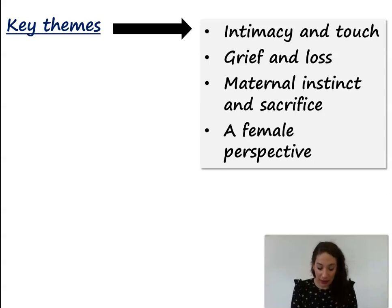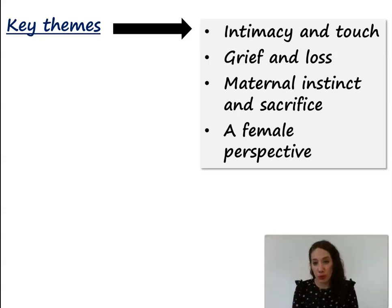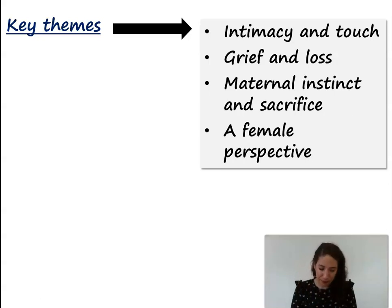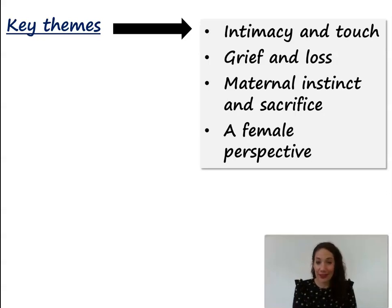The second key idea is grief and loss, which is a recurrent theme in the poem. Think about what a person loses when their partner, son, or daughter goes to war or leaves home and grows up. Linked to this is the idea of maternal instinct and how powerful it can be in shaping our behaviour, actions and feelings. What do parents sacrifice to enable their children to become independent? It's quite a challenging theme to think about.